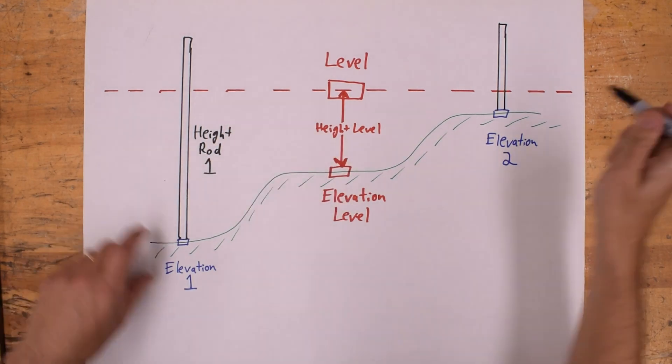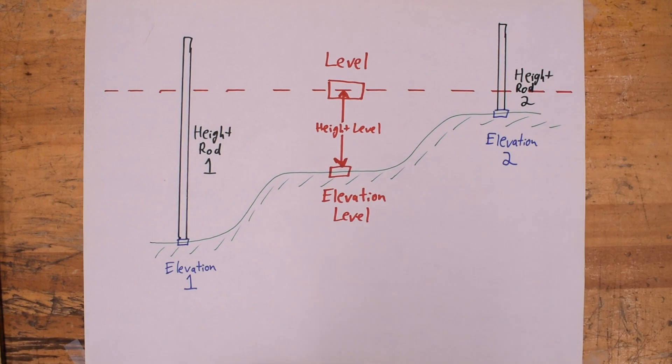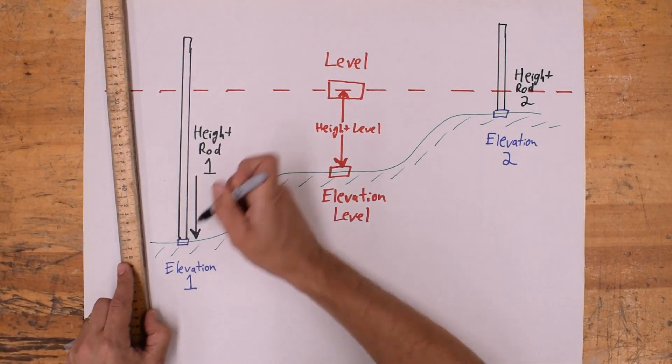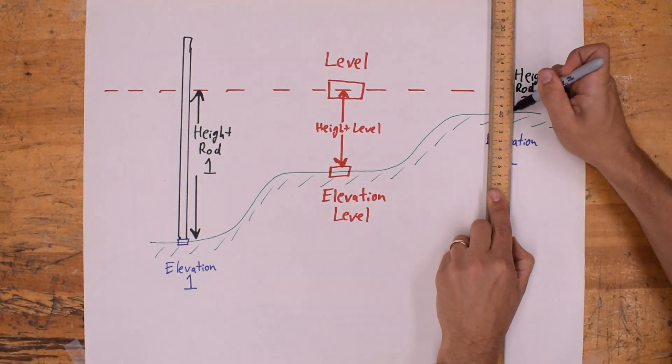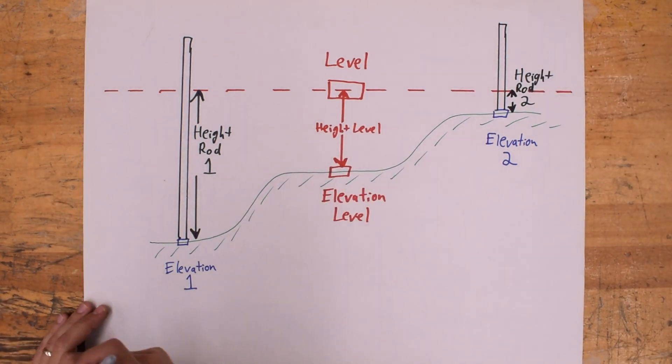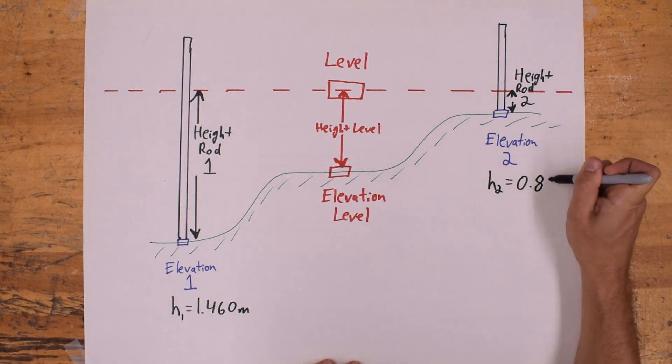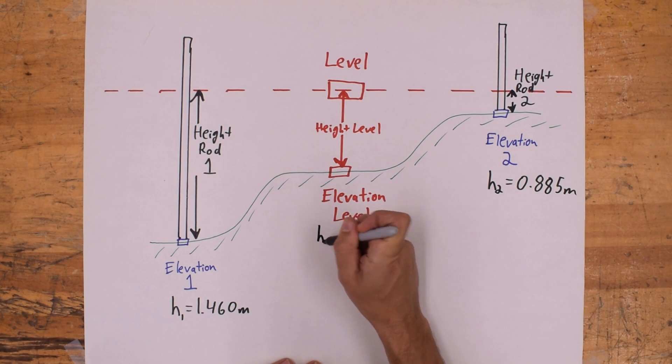And I'll put in the height of the rod 1 and the height of the rod 2 above elevation 1 and 2. So these are the readings that we read using the level and the reticle. So height of the rod 1 is 1.46 meters and height of the rod 2 is 0.885 meters.